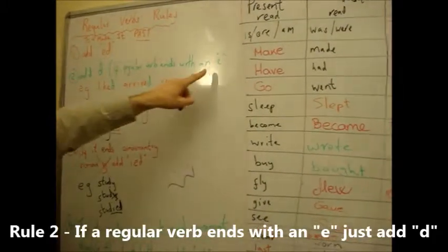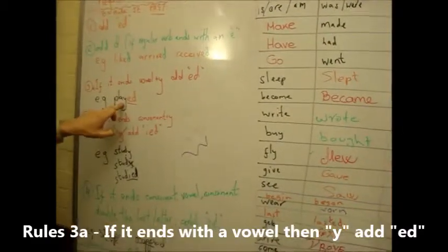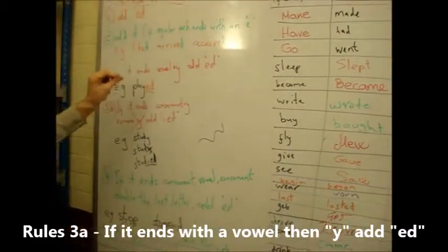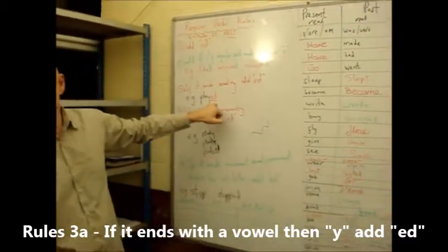If a regular verb ends with an E, just add D. If it ends in a Y, look at the letter before. If the letter before is a vowel, add ED.